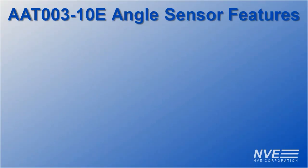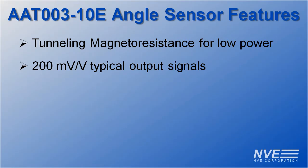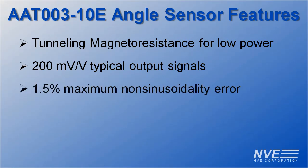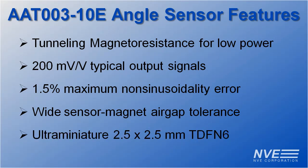The AAT-003 angle sensor at the heart of the demo board uses tunneling magneto-resistance for low power, large amplitude 200 millivolt per volt outputs, excellent accuracy, a wide sensor-magnet air gap tolerance, and an ultra-miniature PDFN6 package.